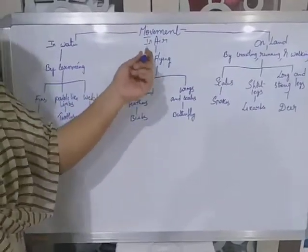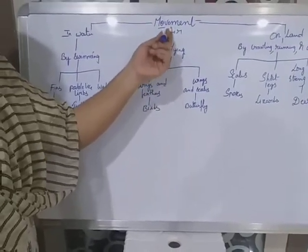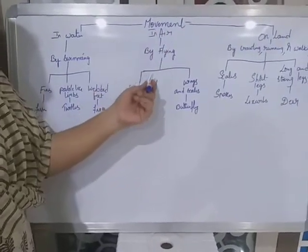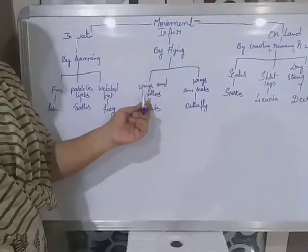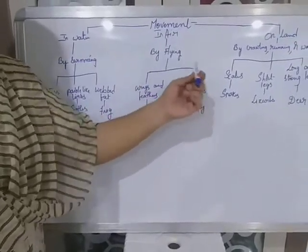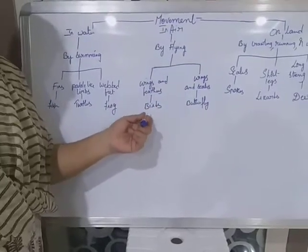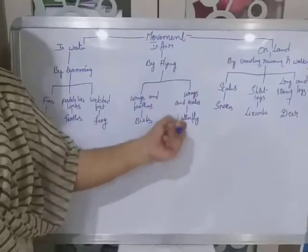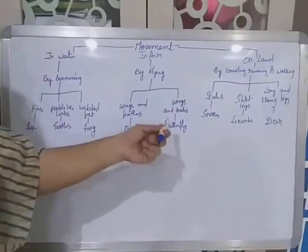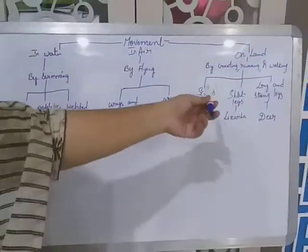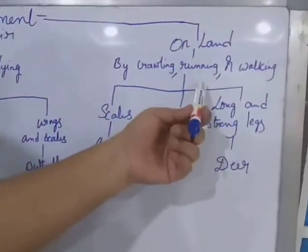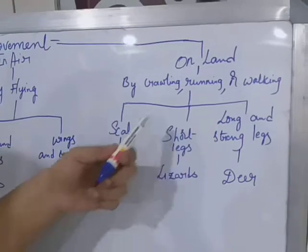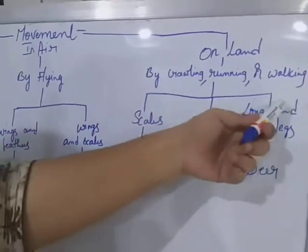Movement in air is divided into two parts: wings and feathers — which means birds; and wings and scales — which means butterflies. Movement on land — crawling, running, or walking — is divided into three parts: scales (snakes), short legs (lizards), and long and strong legs (deer).